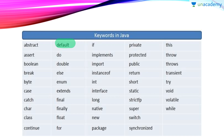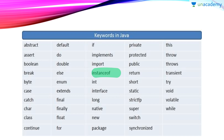Default is a new keyword used in Java — it is an access modifier, and we will discuss it later when we cover access modifiers. There is also implements, which is a new keyword used to inherit any interface. Import is a new keyword used to import any external source file. The instanceof keyword is used to compare two references.